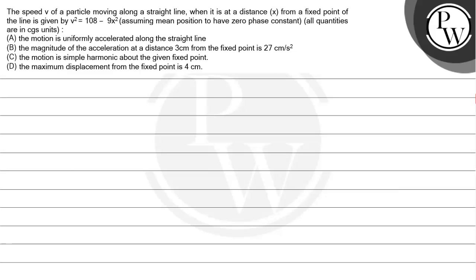Hello everyone, let's read the question. The speed V of a particle moving along a straight line when it is at a distance x from a fixed point is given by V² = 108 - 9x². Assuming mean position to have zero phase constant, the quantities are in CGS units.